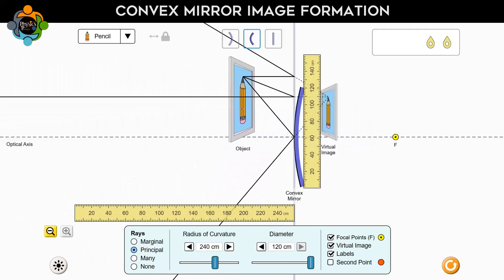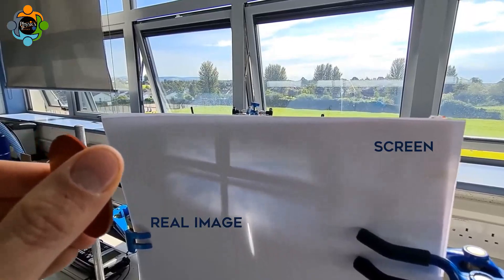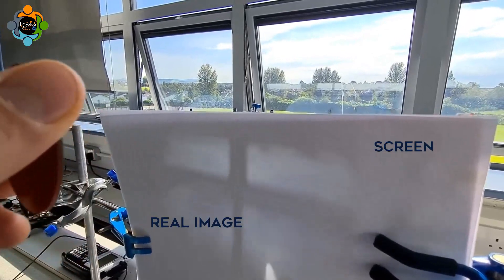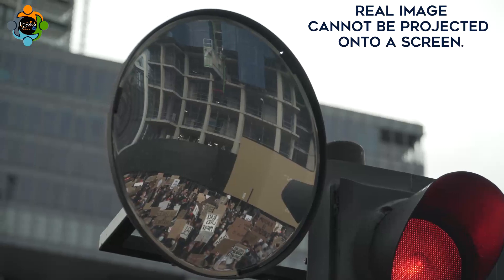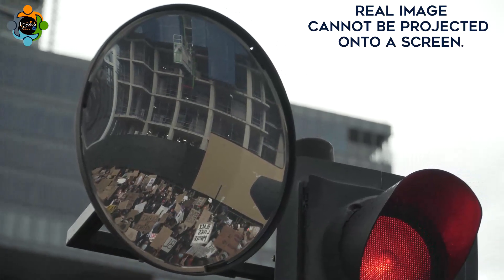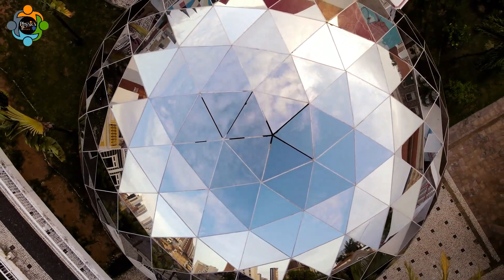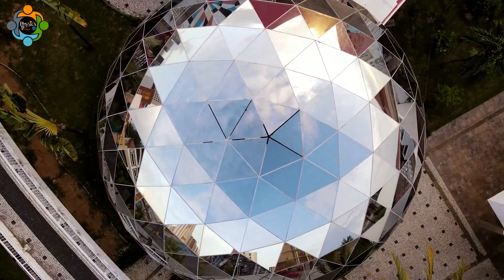Due to these image properties, there is a difference in whether the image can be projected. Since concave mirrors can form real images, these images can be projected onto a screen. In contrast, because convex mirrors only form virtual images, these images cannot be projected onto a screen.